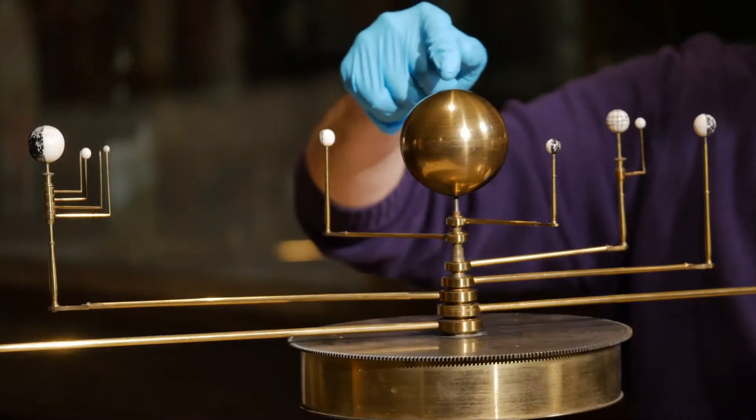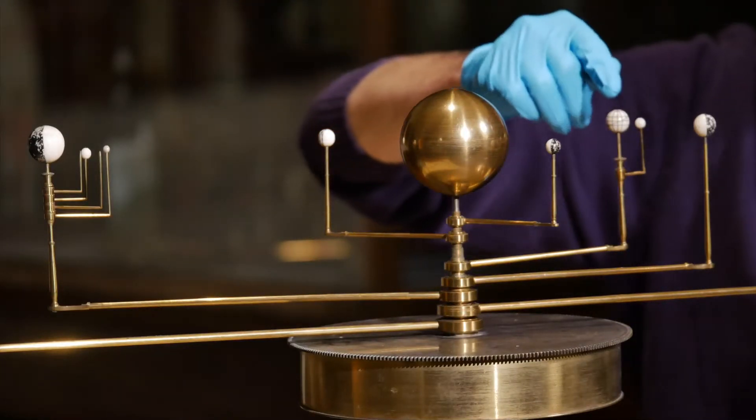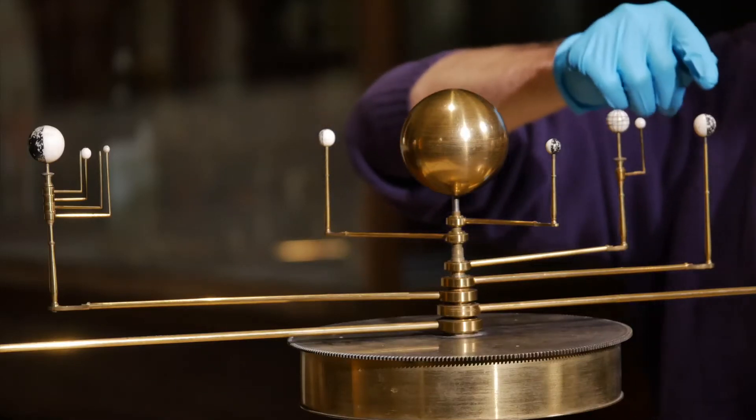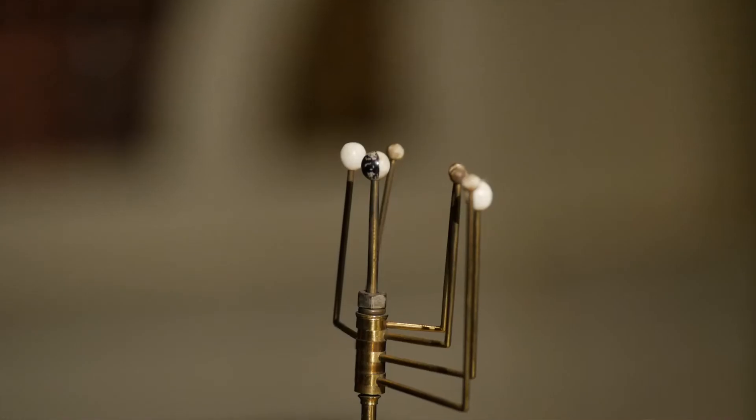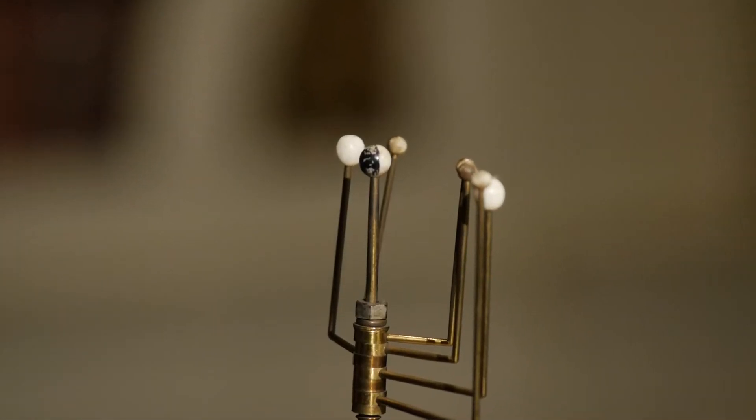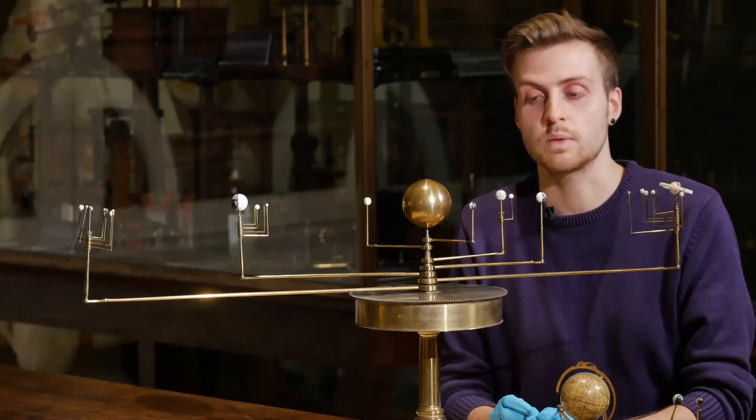In the centre of the model we have the Sun, then Mercury, Venus, Earth with its moon, Mars, Jupiter with its moons, Saturn with its ring and moons, and finally Uranus with its moons. Neptune is absent, however, as it had not yet been discovered in the 18th century when this model was built.